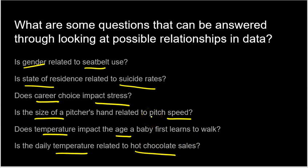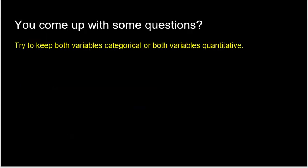The whole point of all these questions — whether you think they're interesting or not — is that there are two variables, and we want to know if there's a relationship between them. You could come up with questions of your own. As the course goes on, think of questions that incorporate two variables. For this unit, try to keep them both categorical or both quantitative.